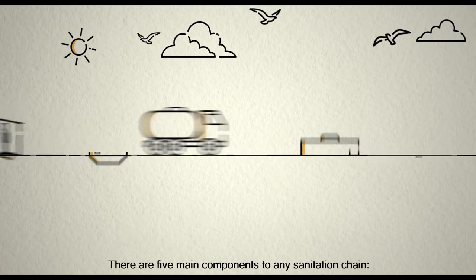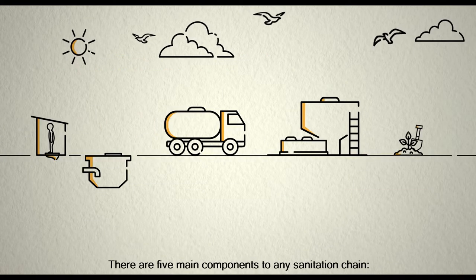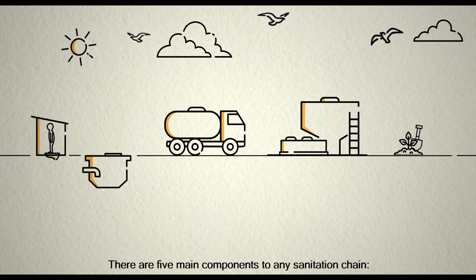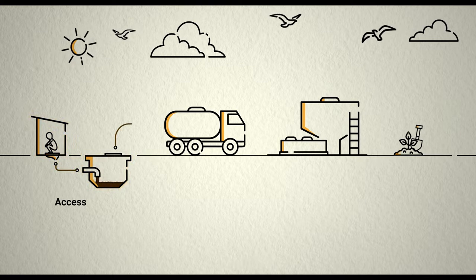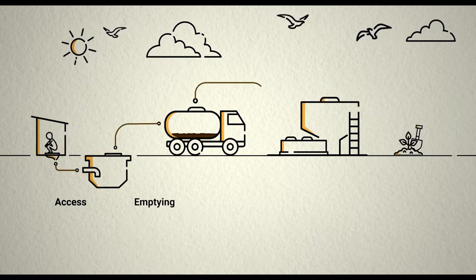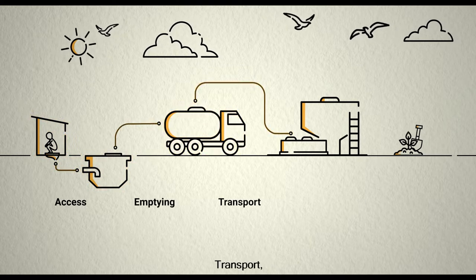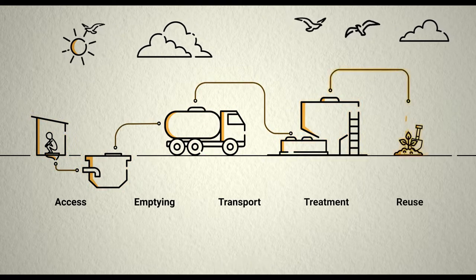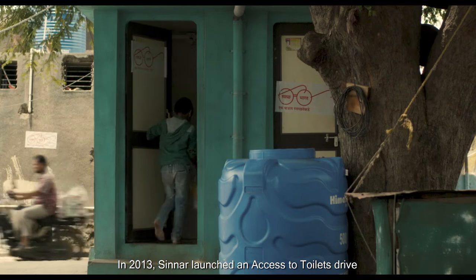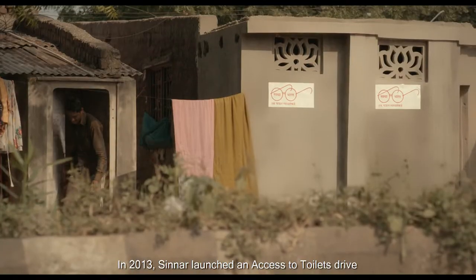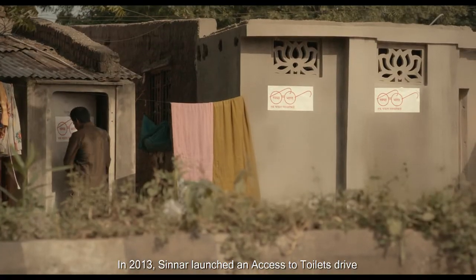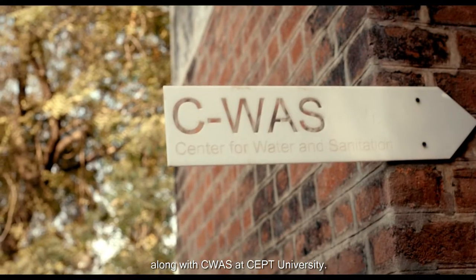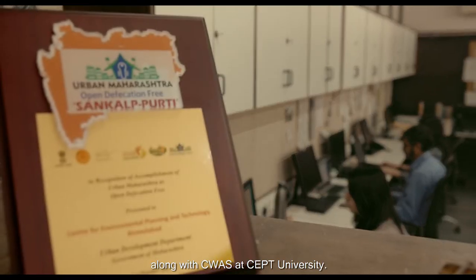There are five main components to any sanitation chain: access, emptying, transport, treatment, and reuse. In 2013, Sinar launched an access-to-toilets drive along with CWAS at SEPT University.